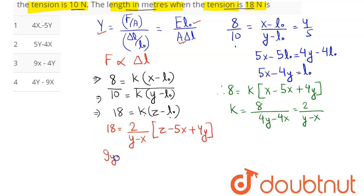So this comes as 9 into Y minus 9 into X is equal to we have here Z minus 5X plus 4Y. Hence value of Z comes out to be our this is equal to 5Y minus we can say here as 4X.